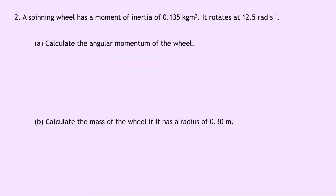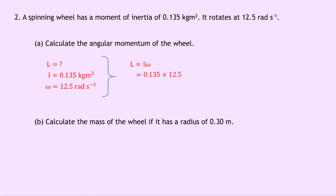Question two says that a spinning wheel has a moment of inertia of 0.135 kilogram meters squared, and it rotates at 12.5 radians per second. Part A says to calculate the angular momentum of the wheel. Notice that we're dealing with a wheel rather than a point mass, so we're thinking about the angular momentum of a rigid body. Writing down what we know: moment of inertia is 0.135 kilogram meters squared, angular velocity is 12.5 radians per second. Our equation is L equals I omega. Substituting in, we get 0.135 times 12.5, which gives a final answer of 1.69 kilogram meters squared per second.